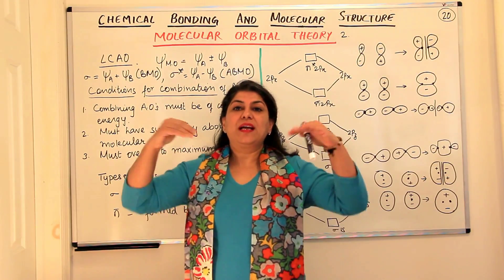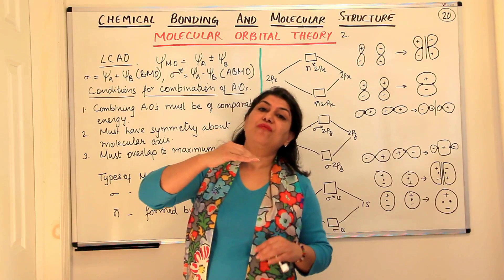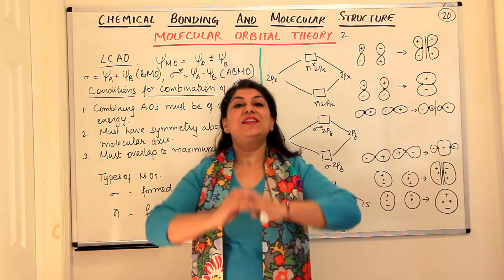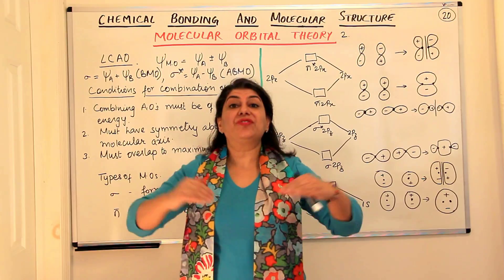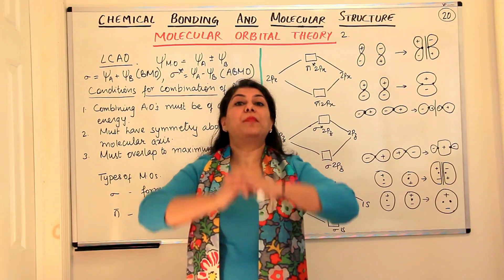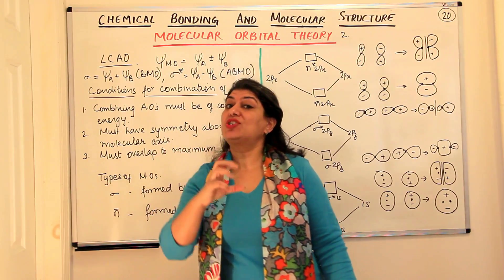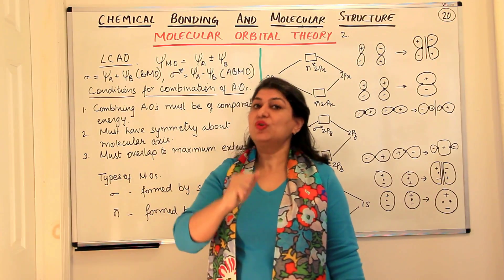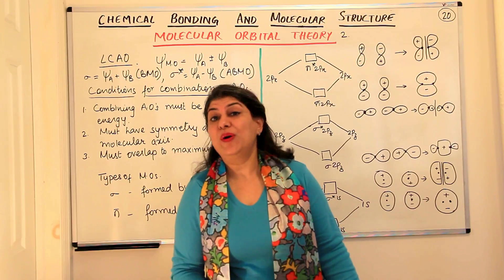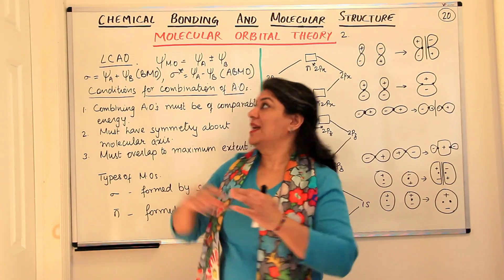When the two waves combine such that the crest of one falls over the crest of the other, the interference is known as constructive and it reinforces. The resultant wave is much stronger—or we would say it is much more stable. A condition of stability is a condition of low energy.